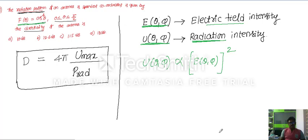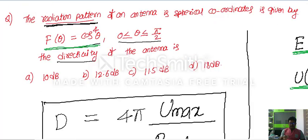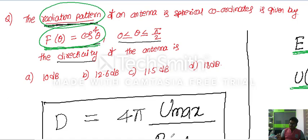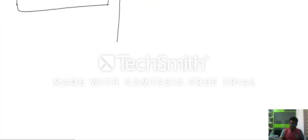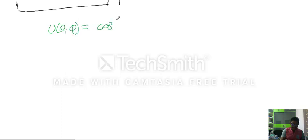Since the problem states 'radiation pattern,' we should treat the given function as radiation intensity. So we take U(θ, φ) = cos⁴θ. Now the maximum value of radiation intensity, U_max, occurs when cos⁴θ is maximum, which is 1.